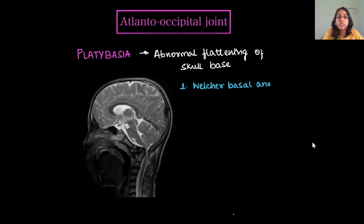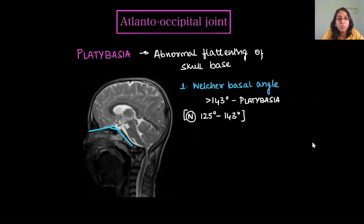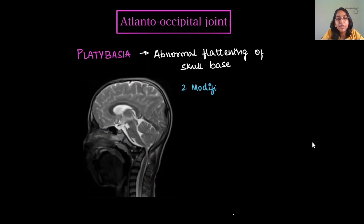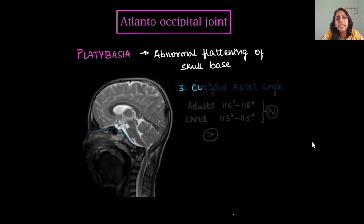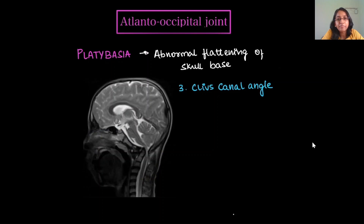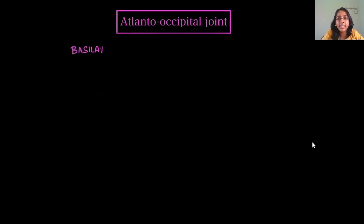Platybasia means flat base of skull, with abnormal flattening of the skull base. The Welcher basal angle will be more than 143 degrees — normal is 125 to 143. The modified basal angle on MRI, measured along the anterior cranial fossa to tuberculum and along the posterior aspect of the clivus, is 116 to 118 degrees in adults and 113 to 115 in children — this is increased in platybasia. The clivus canal angle is decreased in platybasia, below 150 degrees, compared to the normal range of 150 to 180 degrees.